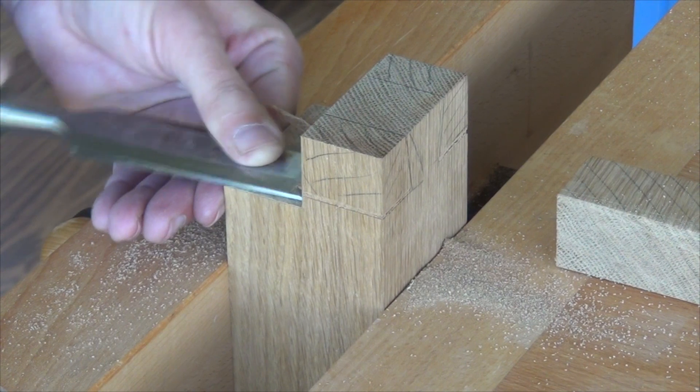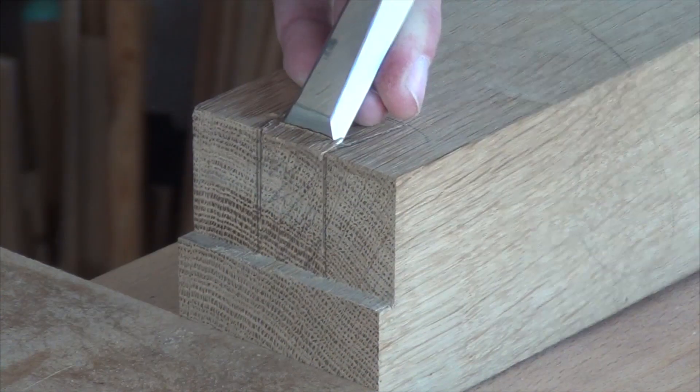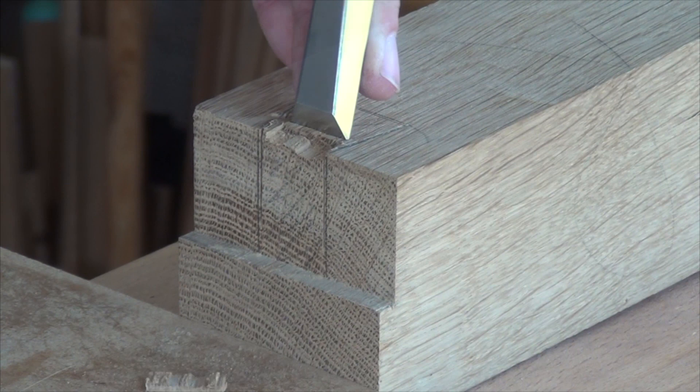I start by cleaning up any of the sawn surfaces that didn't quite hit the mark, and then chop out the socket for the dovetail.